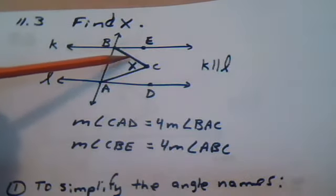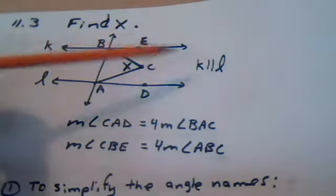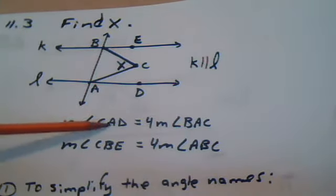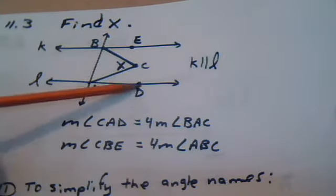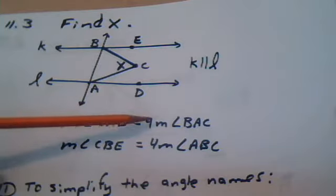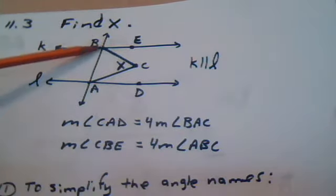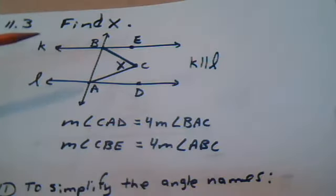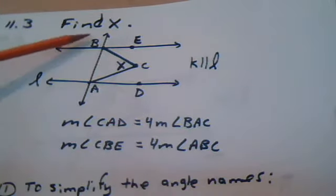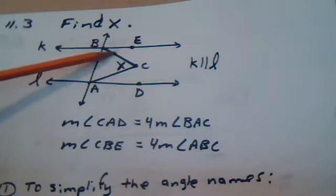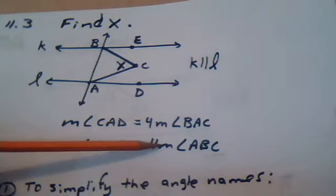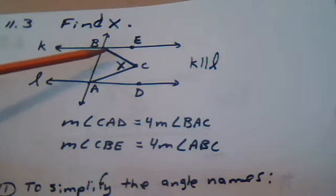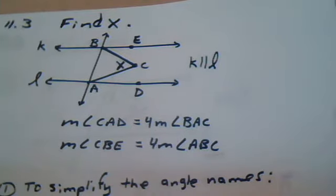Find x — this angle is what we're looking for. These two lines should be taken as parallel. They're telling us that the measurement of angle CAD is four times the measurement of angle BAC, so this angle is four times as big as this one. They're also telling us that the measurement of angle CBE is four times as big as the one labeled ABC, so this one out here is four times as big as this one.